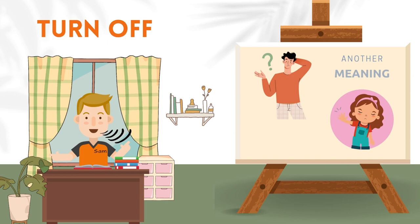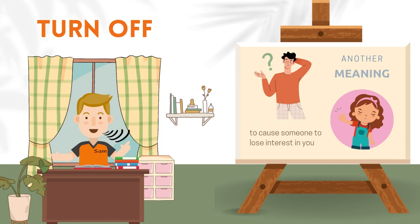Now let's talk about the second meaning of turn off. Imagine you meet someone for the first time, but you figure out that he is very offensive — the way he speaks, the way he behaves. So you don't want to talk to him anymore, and you might want to stay away from him. You might say, his attitude really turned me off, so I don't want to talk to him anymore. Turn off here means to cause someone to lose interest.